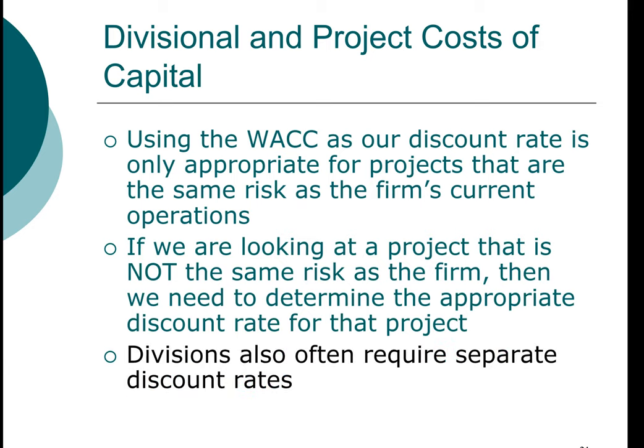Another case is a company that has many different divisions. An example often used is GE — General Electric — which famously makes everything from light bulbs to jet engines to medical equipment. Obviously, the business risk of light bulbs and the business risk of a jet engine are very, very different. So each division in GE would have to have its own separate discount rate to use when evaluating projects. The central theme here is that we have to match the risk of the project to the risk of the discount rate.